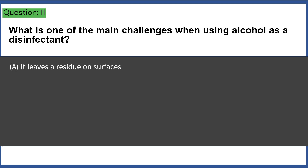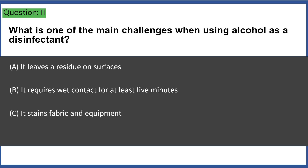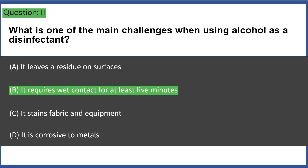What is one of the main challenges when using alcohol as a disinfectant? a) it leaves a residue on surfaces, b) it requires wet contact for at least five minutes, c) it stains fabric and equipment, d) it is corrosive to metals. Answer: B, it requires wet contact for at least five minutes.